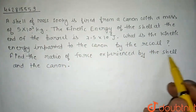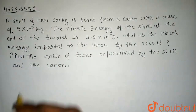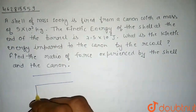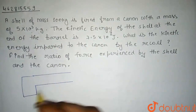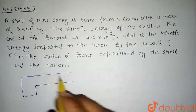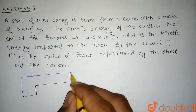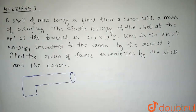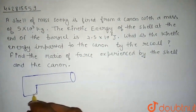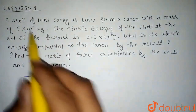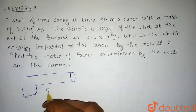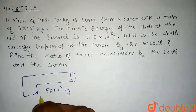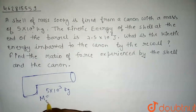Force experienced by the shell and the cannon. So here we have a cannon given. A cannon is a large gun. The mass of the cannon can be given as 5×10³ kg. So this will be capital M, or M2.